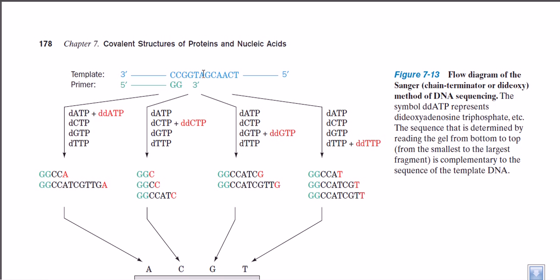The Sanger method is also called chain terminator sequencing, as well as dideoxy sequencing. It is called chain termination sequencing because in this method we are actually terminating the chain from one side.